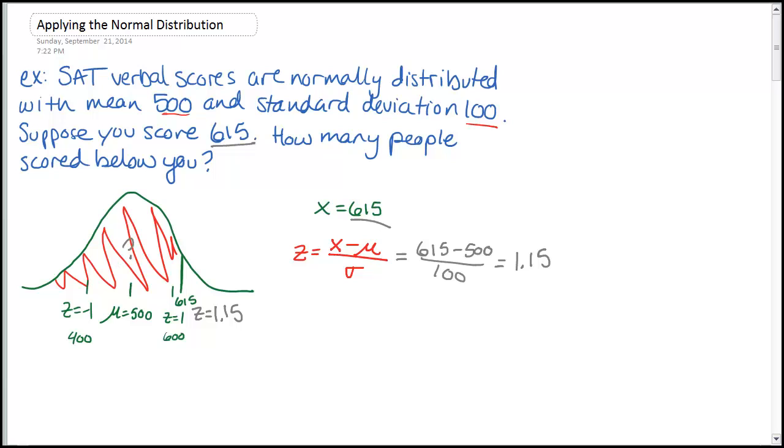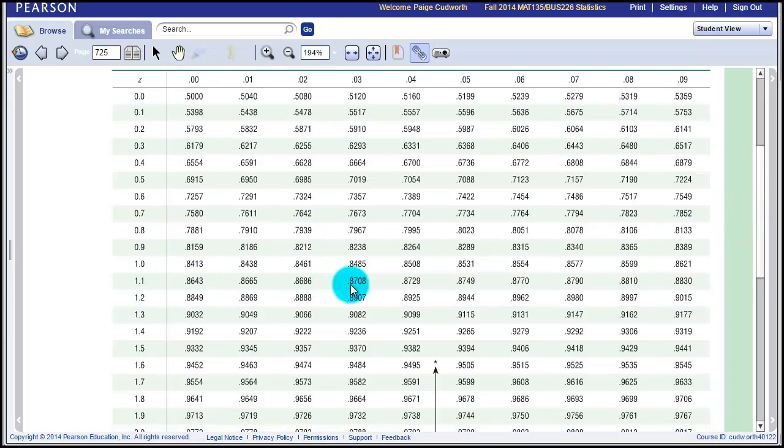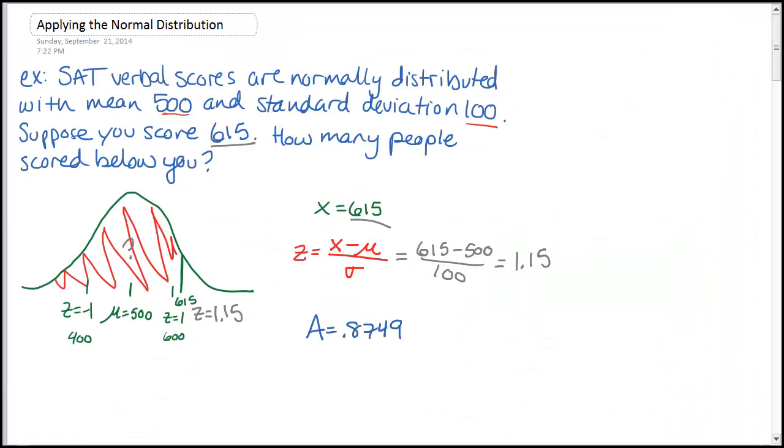That's the z-score that we're dealing with if our score on the SAT was 615. So now we want to know what percentage of people were below that. We can look this up in our z-score table. We want a z of 1.15, so .8749. As a percentage, we would say that this is 87.49% of everybody who took the SAT would score below 615. We could also figure out how many people scored higher than us by just doing 1 minus this number.